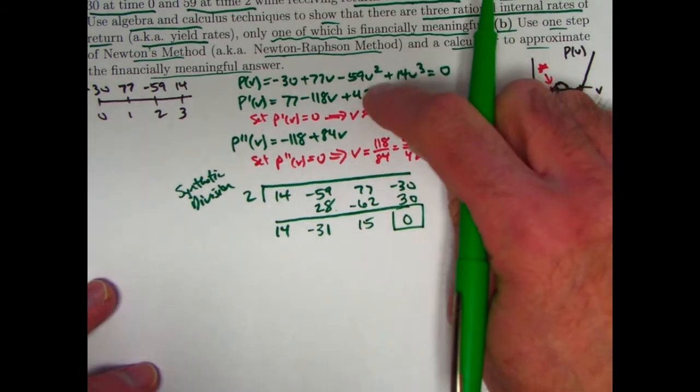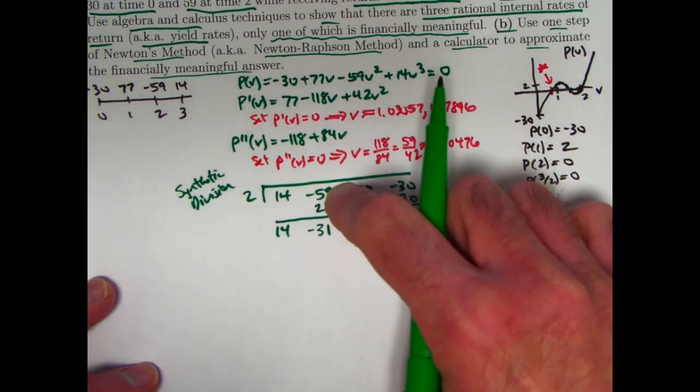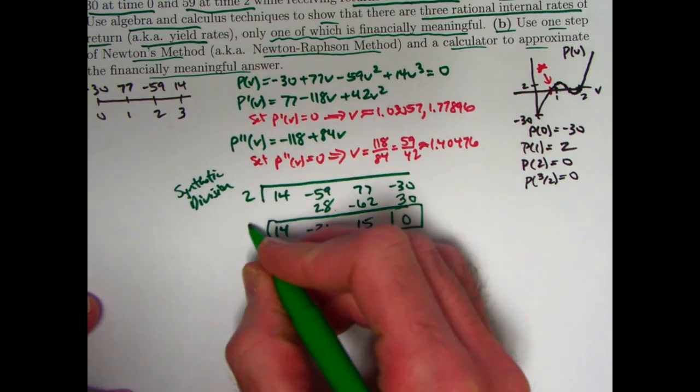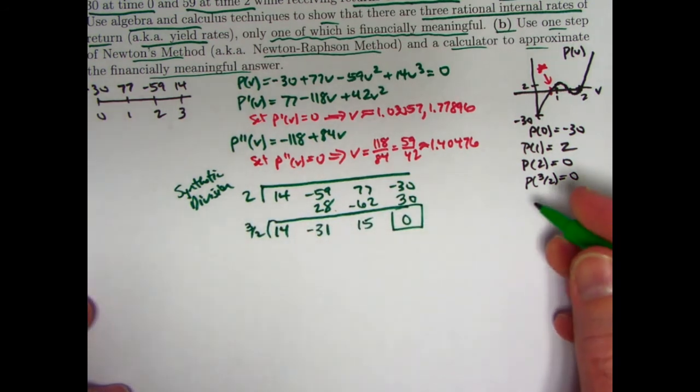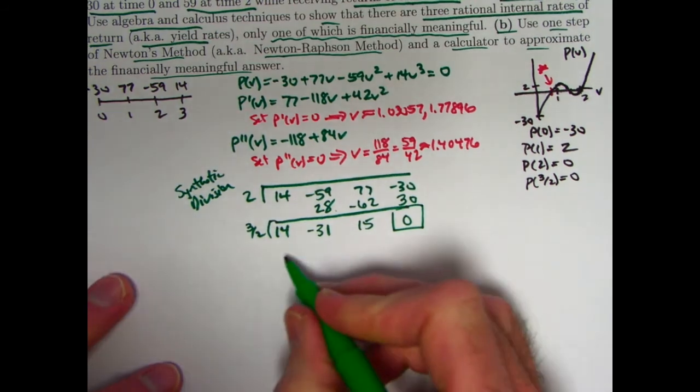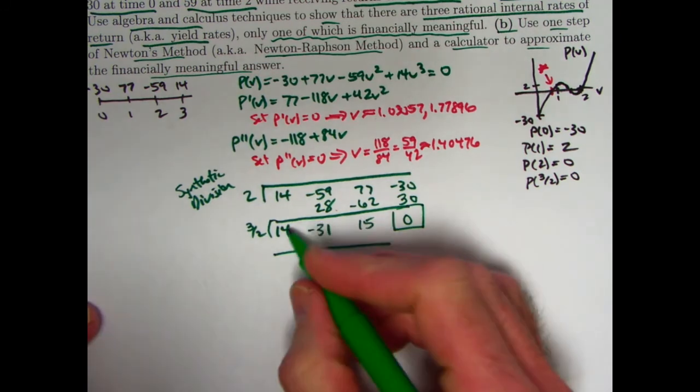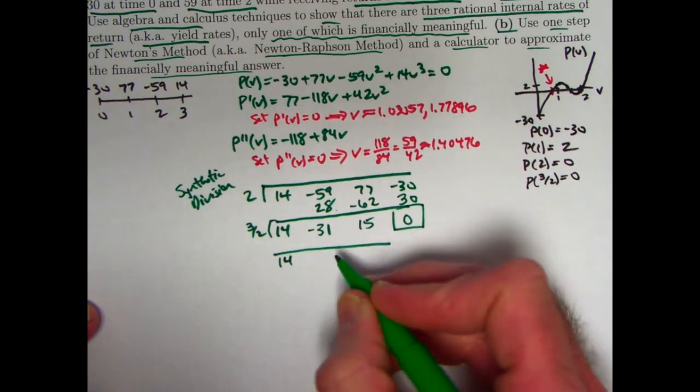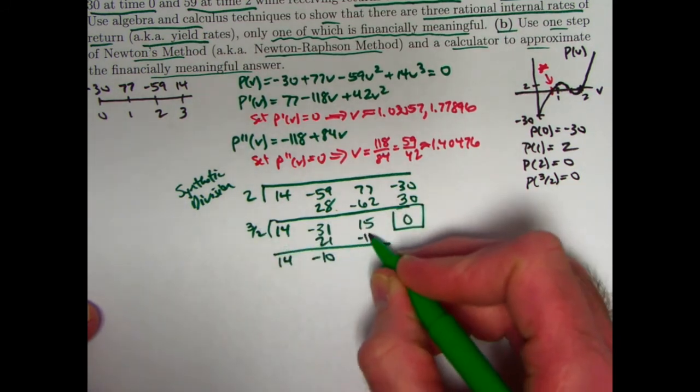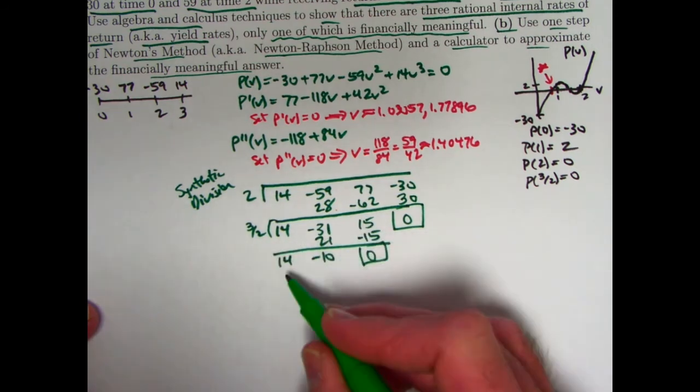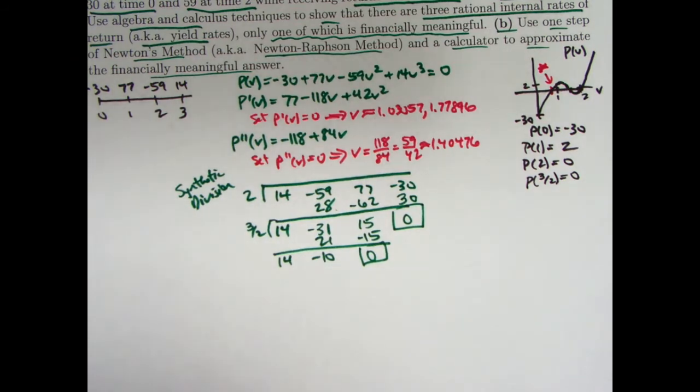And the method is you add down the columns and you take the number over here and multiply to get the next number that goes just under these different coefficients. So I go 14 plus 0 to give me 14. Multiply 2 times 14 is 28. Put the answer here. Add, don't subtract, negative 59 plus 28 is negative 31. Multiply 2 times negative 31 is negative 62. Add 77 plus negative 62 is positive 15. Multiply 2 times 15 is 30. Add negative 30 plus 30 is 0. The fact that that's 0 means the remainder when you divide p(v) by v minus 2 is 0, meaning that 2 is a root.